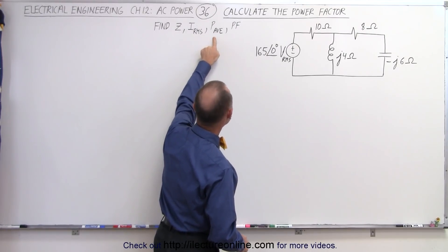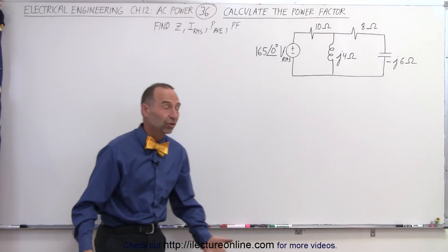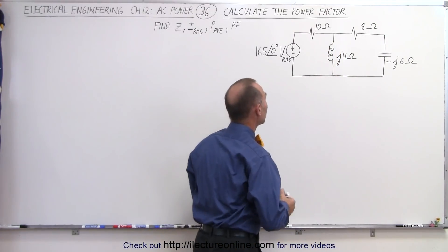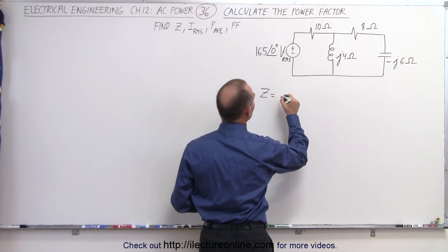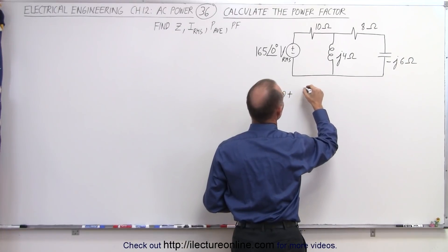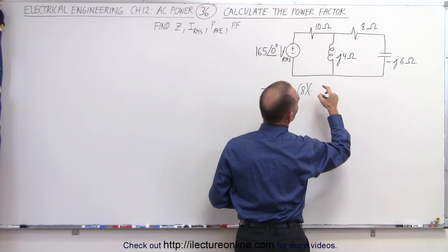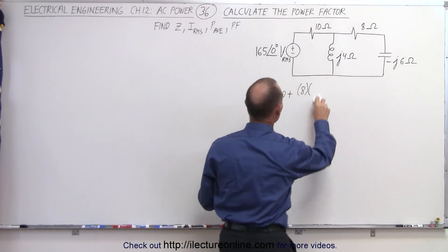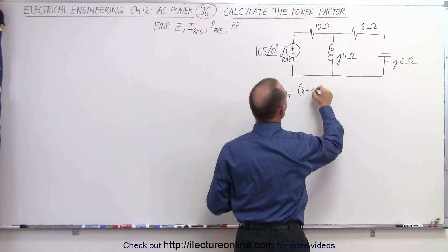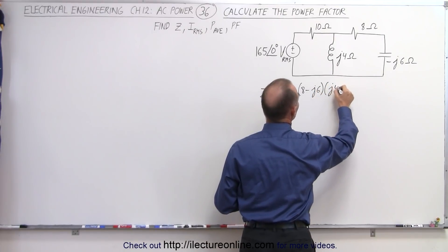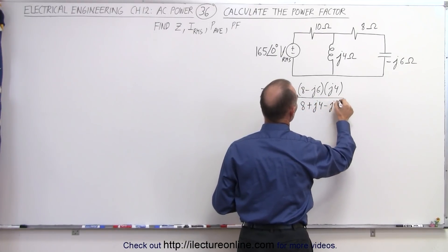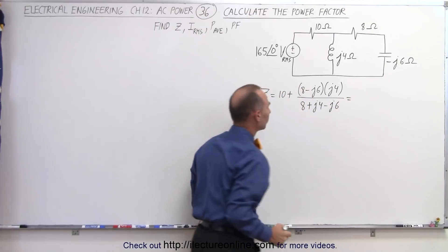Let's start with finding the impedance. We have two parallel branches connected in series to the 10-ohm resistor, so the impedance Z is going to be equal to 10 plus these two in parallel. We use the product-over-sum rule, which gives us: we'll multiply (8 − j6) times (j4) and divide by the sum of the two, which is 8 + j4 − j6.